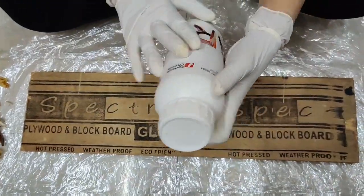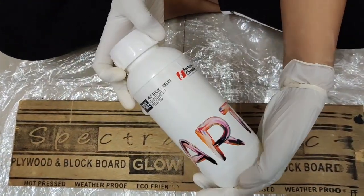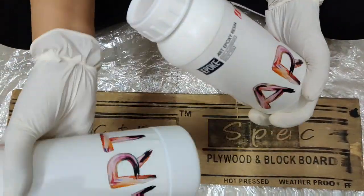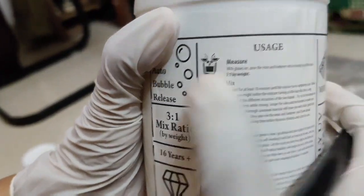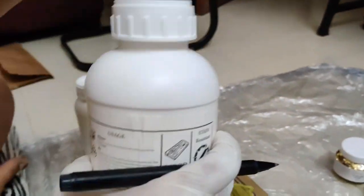I have taken Epoxya art resin which I have ordered from Amazon. I will list down the link in the description. The ratio is 3 is to 1, so the resin is 3 parts and the hardener is 1 part.